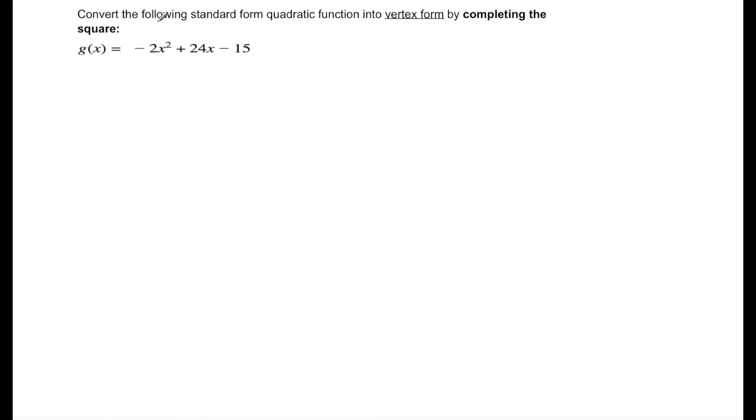This question is saying convert the following standard form quadratic function into vertex form by completing the square. First thing we're going to notice is that we have a coefficient out front here. That's very important when we're completing the square. The first thing you always want to do is to get rid of that coefficient or make that coefficient one. So what we're going to do is divide by negative two on all three of these terms.